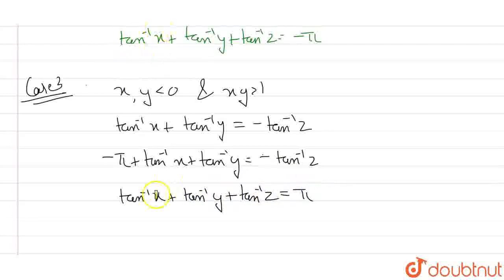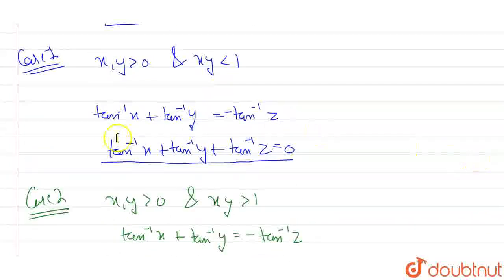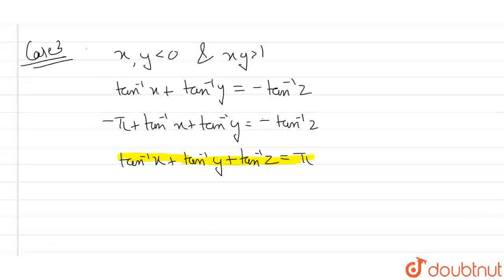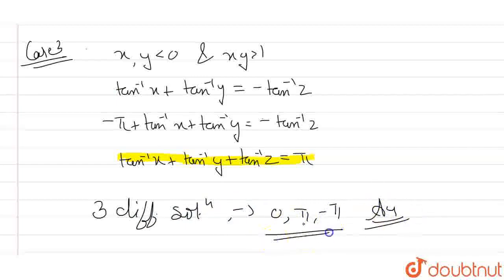I can clearly see that I have three solutions. The first case gives zero, the second gives minus pi, and the third gives pi. So the three different values are 0, pi, and minus pi. This is the answer we are looking for.